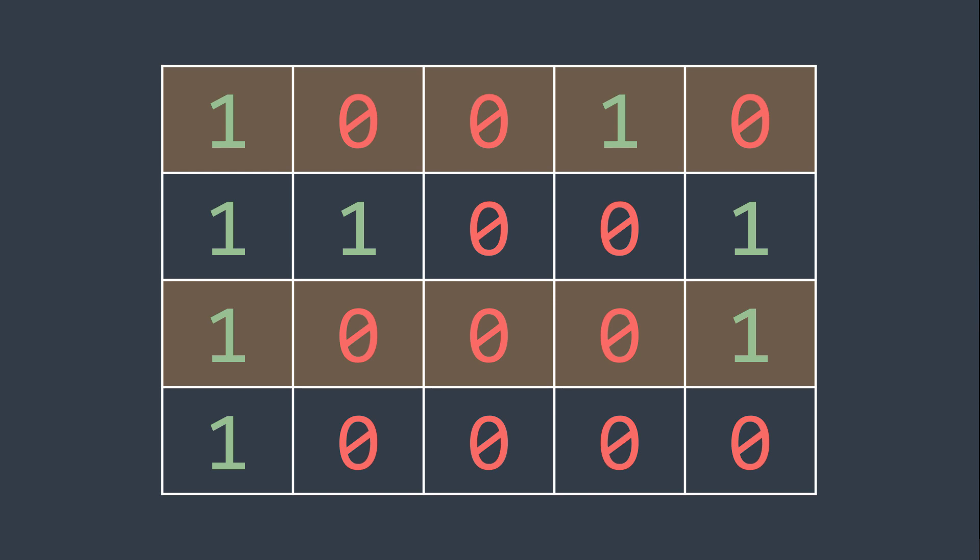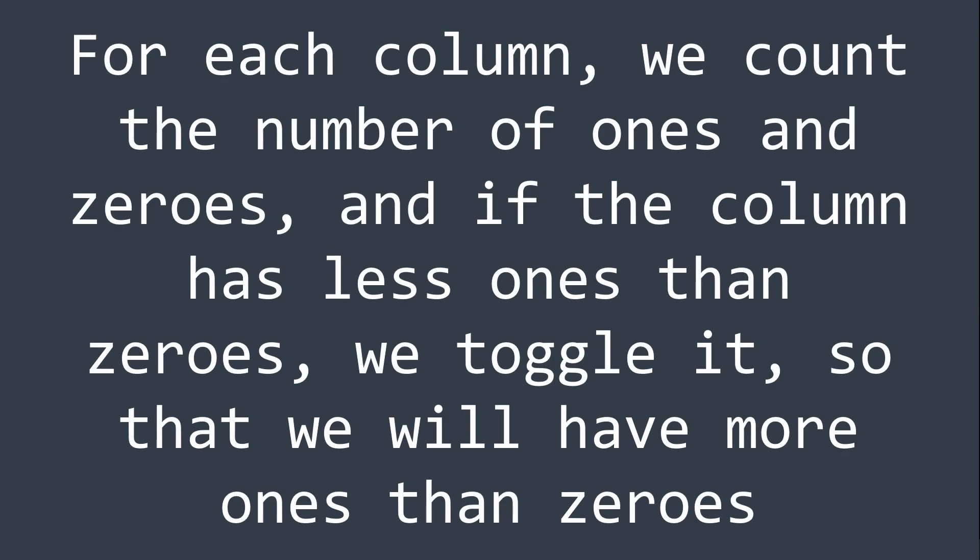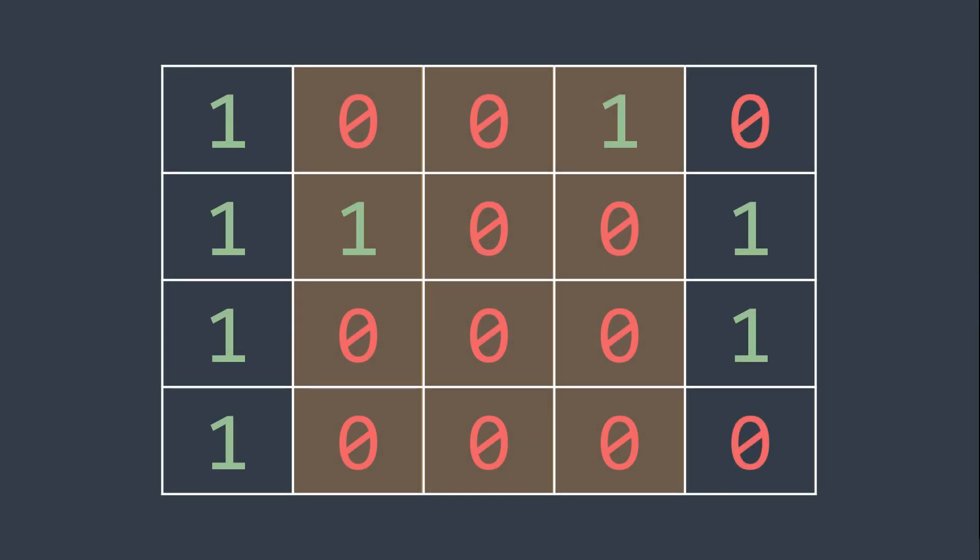So here our goal is to have the maximum number of ones in a column, and in order to do that, for each column, we count the number of ones and zeros, and if the column has less ones than zeros, we toggle it, so that we will have more ones than zeros. For example here, the second column, the third one, and the fourth one have less ones than zeros, so we toggle them.